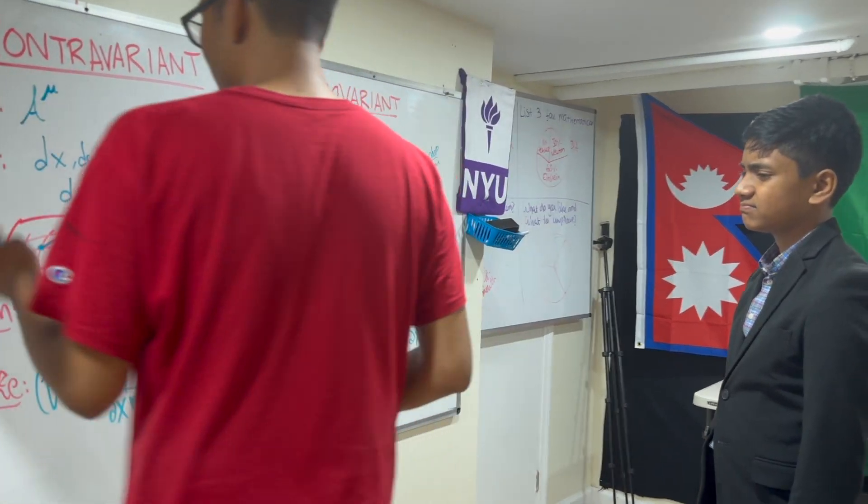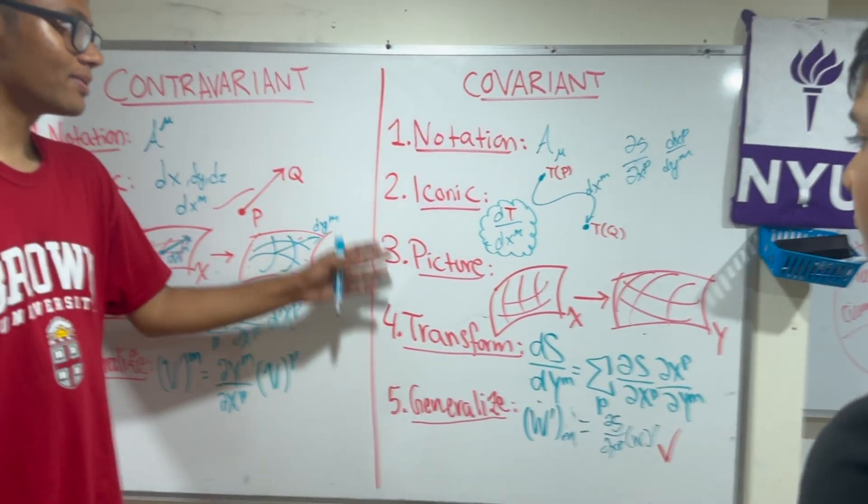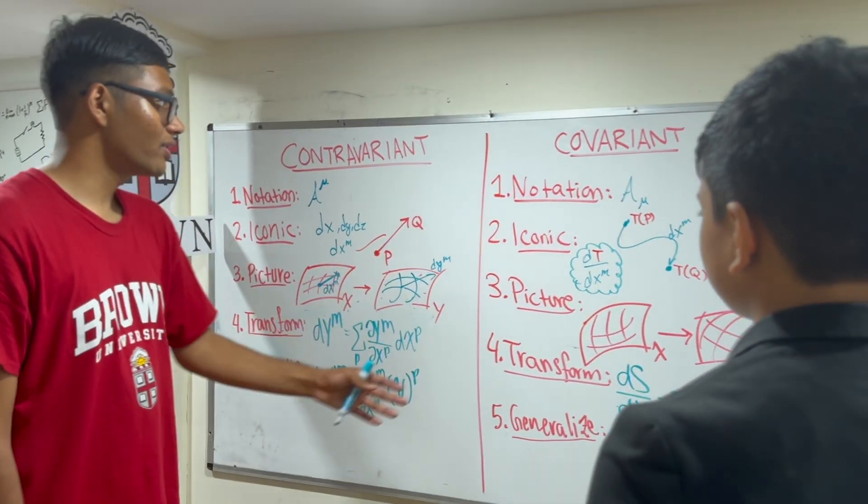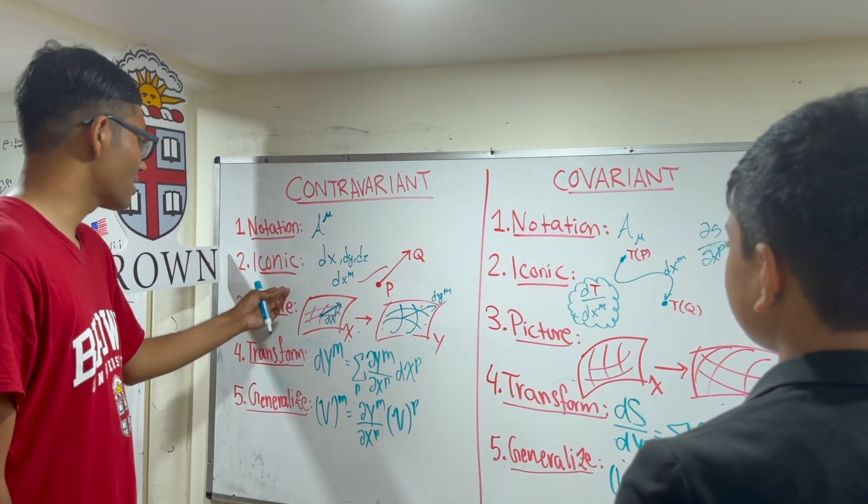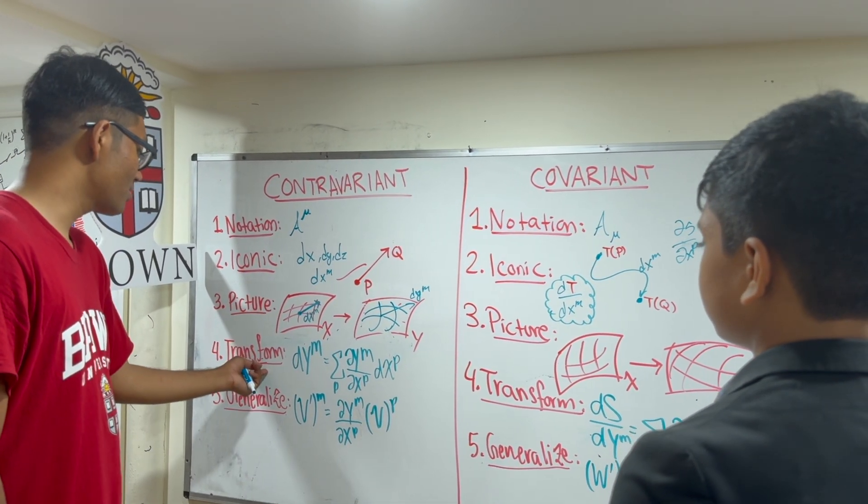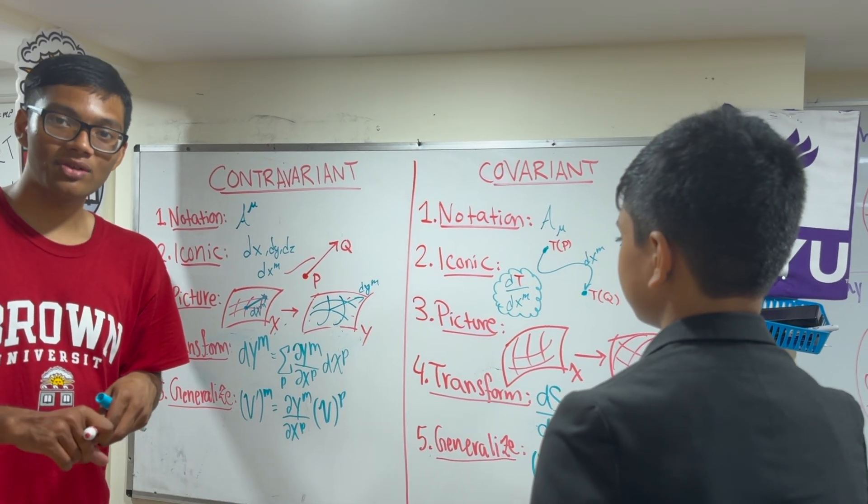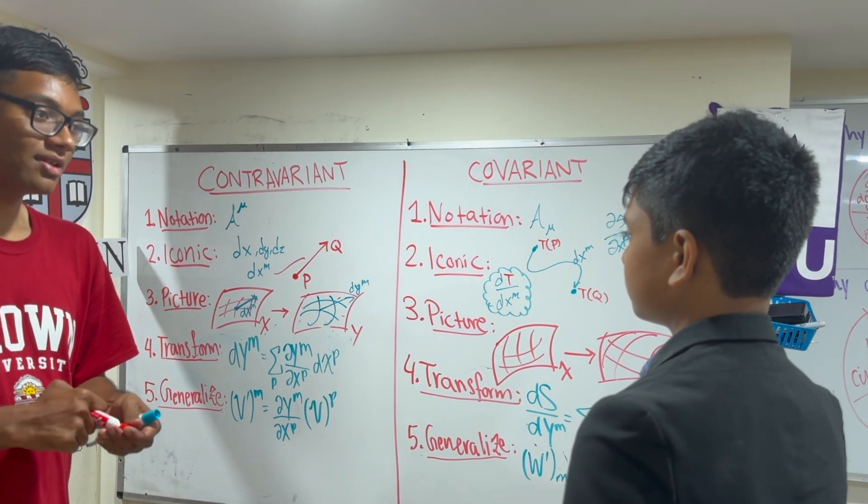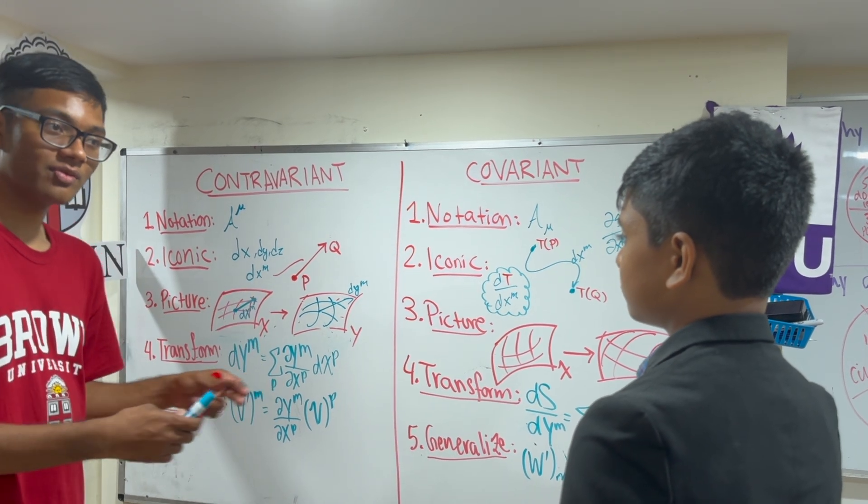Now we've taken a look at the five big steps for contravariant and covariant vectors. Notation, iconic example, picture, transformation, and generalization. Let's conclude our lecture by asking our individual here to summarize what we've discussed.